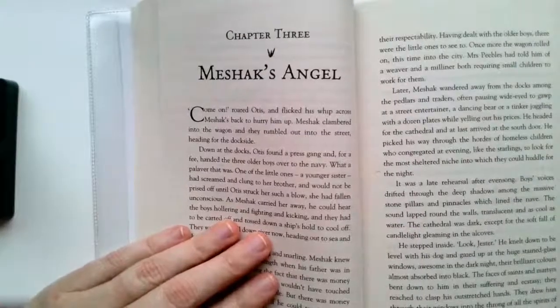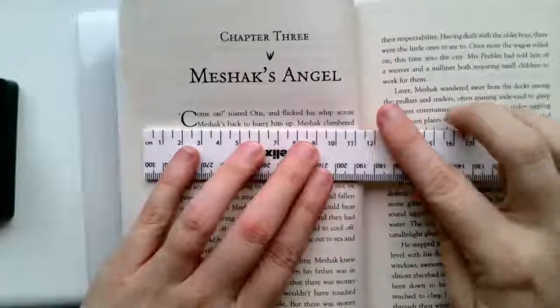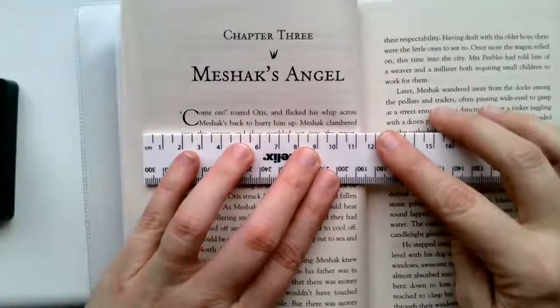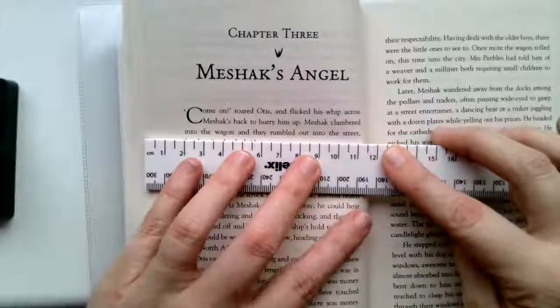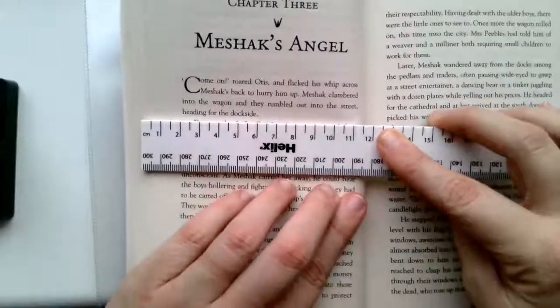Chapter Three: Meshac's Angel. Come on, roared Otis, and flicked his whip across Meshac's back to hurry him up. Meshac clambered into the wagon, and they rumbled out into the street, heading for the dockside.